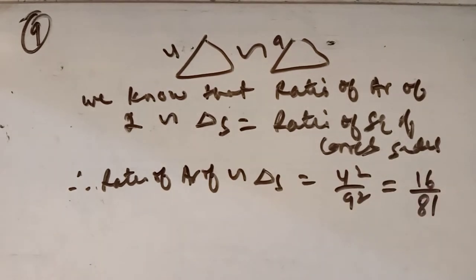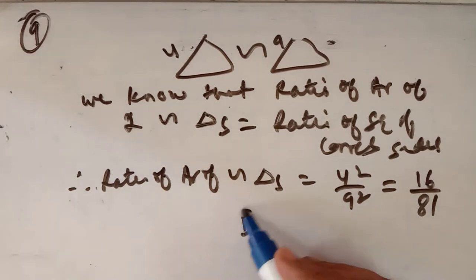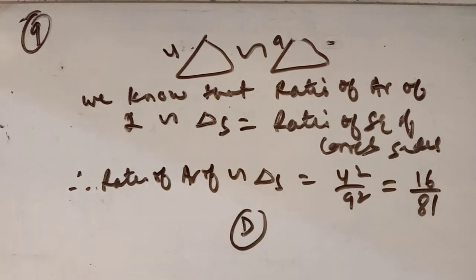Therefore the ratio of their areas = (4)² : (9)² = 16 : 81. We get 16 is to 81, which is option D. This is question number 9 of this exercise.